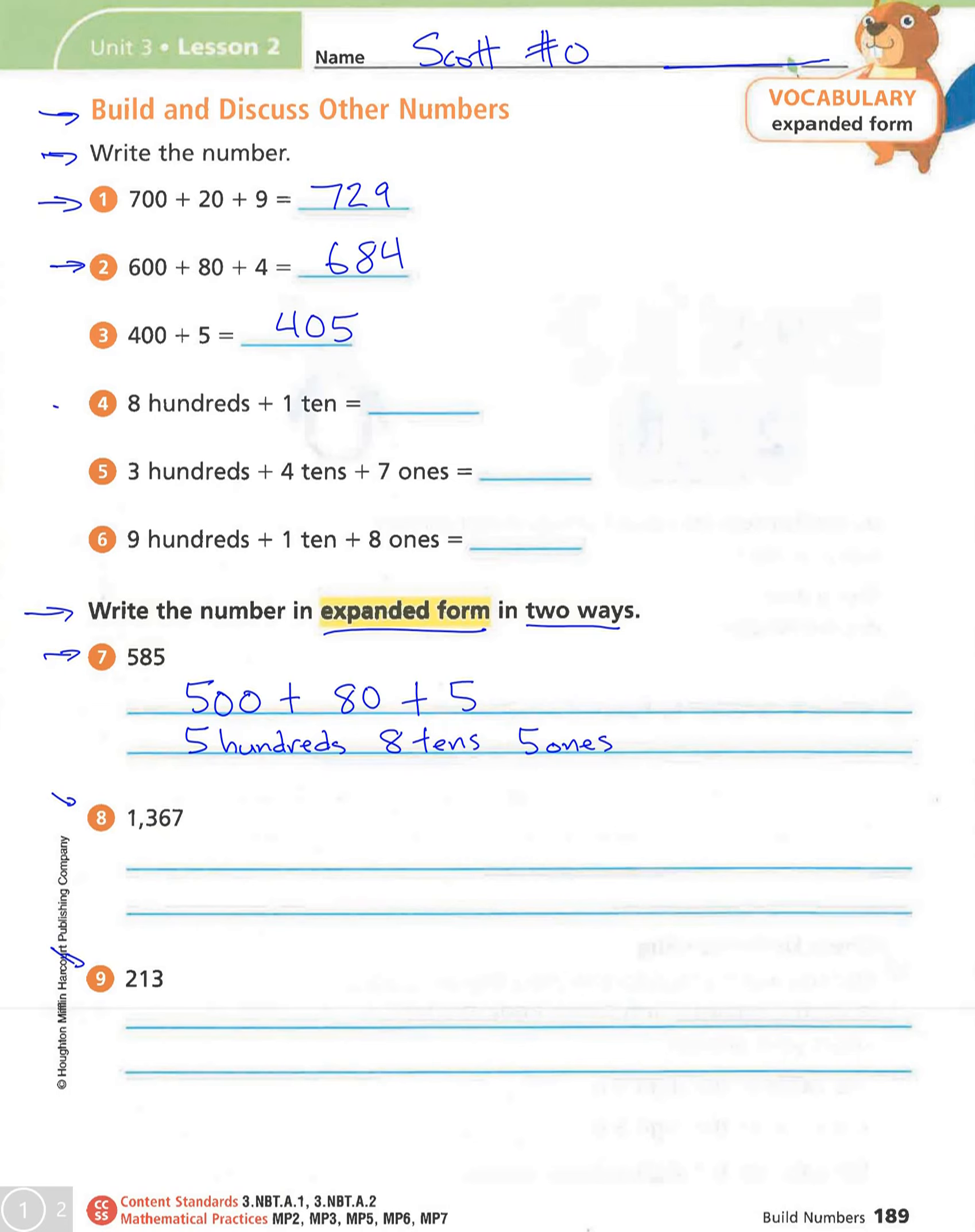On number 4, 8 hundreds and then 1 ten, but no ones. And again, as you use your cards, your secret code cards, that's what you built.